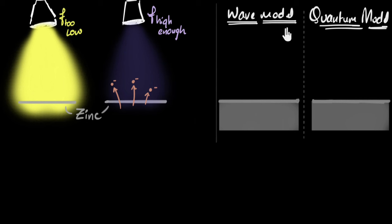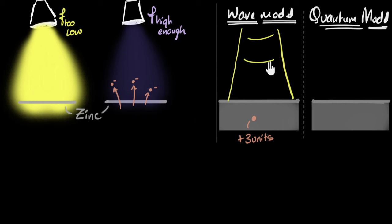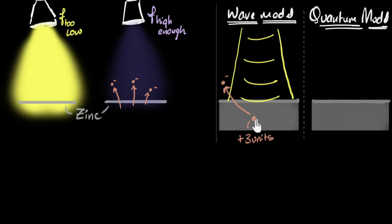Let's consider the wave model and the quantum model separately, starting with the wave model. Imagine this is our zinc metal and here's an electron trapped inside. For it to escape, it needs to gain some energy — let's say three units. According to the wave model, light is a wave, and when you shine light, the electron starts absorbing energy from this wave. Its energy increases plus one, plus two, and finally once it exceeds three, it has enough energy to escape — photoelectric effect. According to this model, it doesn't matter what the frequency is.